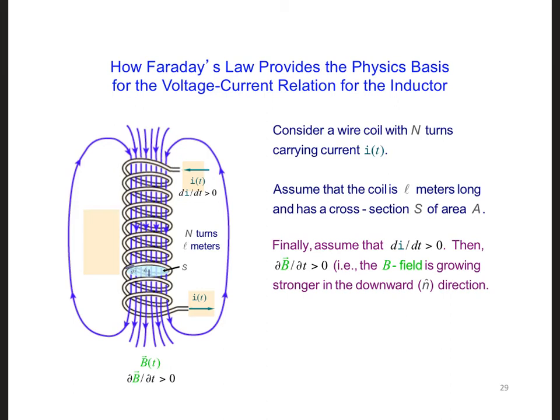So, here I have drawn a wire coil with N turns and the length of it is L meters. So, this is L. The cross-sectional area of each of these loops of the coil is S. It has an area of A. And we're going to assume that the current is increasing in time. So, di dt is greater than 0. So, by the right-hand rule, the magnetic field in the coil is going to be in the downward direction in the positive N-hat direction. We'll define that as a positive N-hat direction.